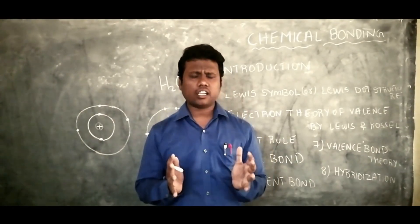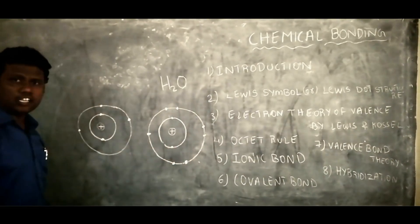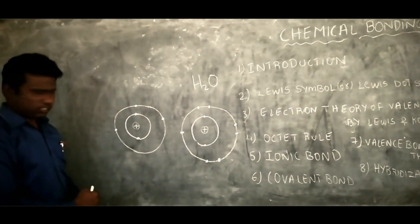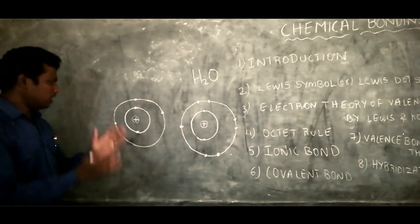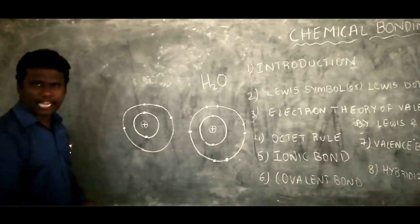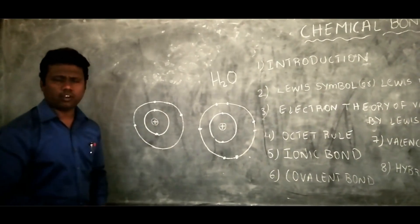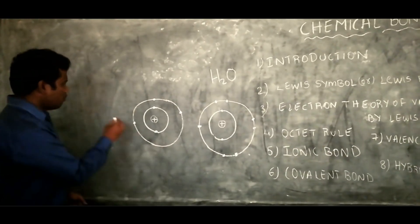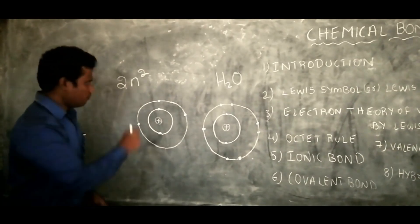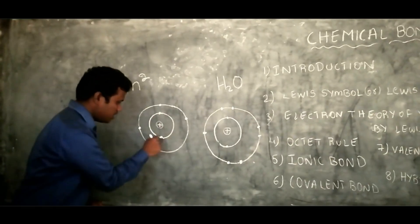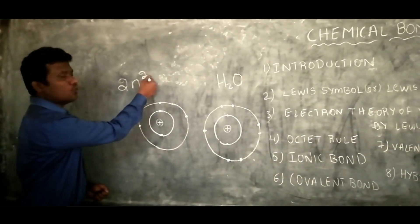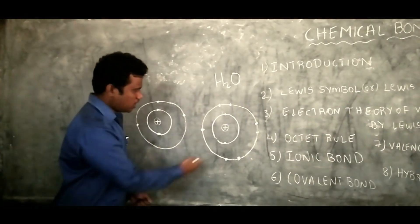Let me show how electrostatic force is responsible for chemical bonding. I have drawn two diagrams representing two different atoms. These shells with dots represent electrons. We know the formula to fill electrons in any shell is 2n², where n is the number of the shell. So in the first shell we can fill a maximum of 2 electrons, and in the second shell we can fill 8 electrons.